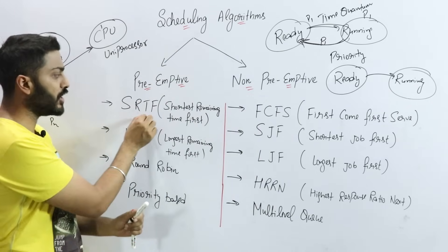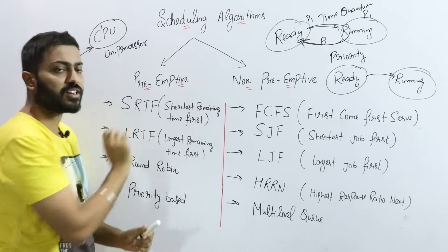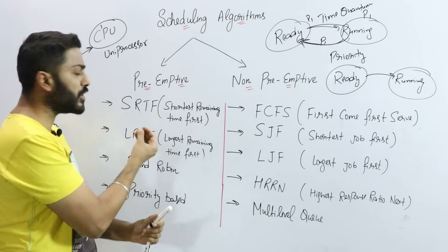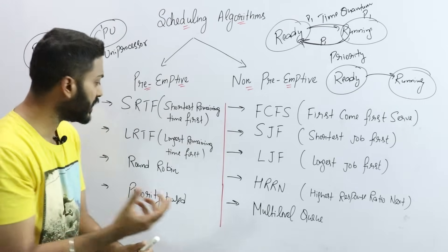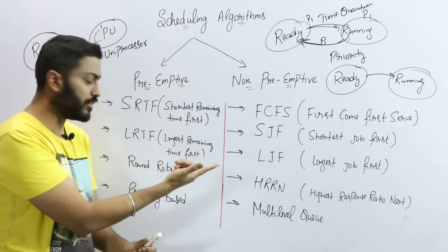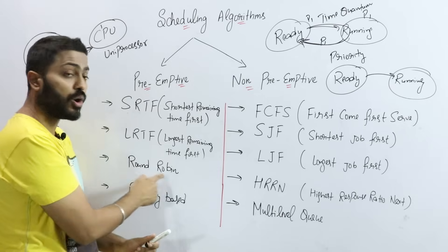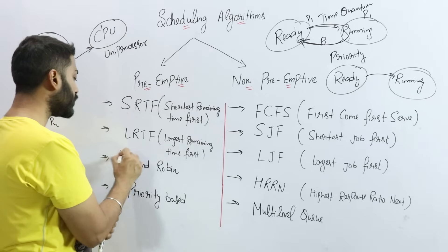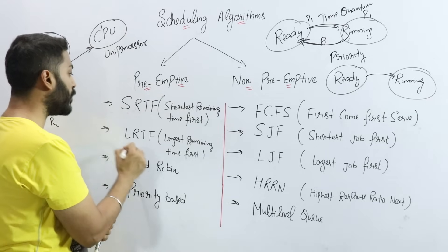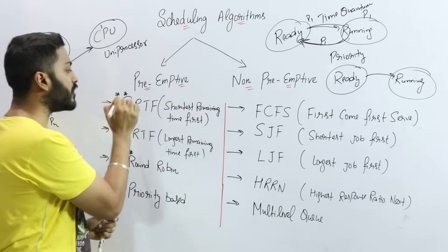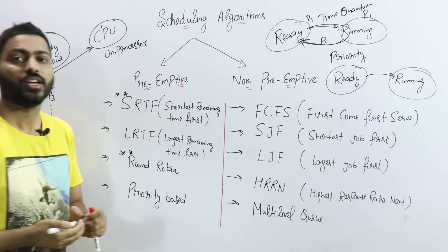In preemptive scheduling, the algorithms used are: Shortest Remaining Time First (SRTF) — also called Shortest Remaining Job First — Longest Remaining Time First, and Round Robin. Round Robin and SRTF are very important algorithms.